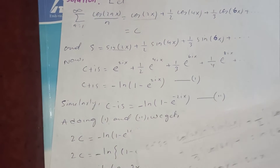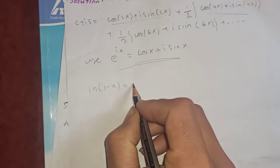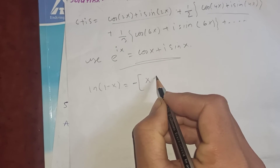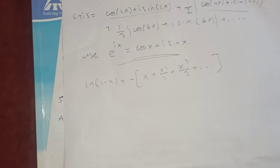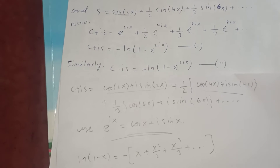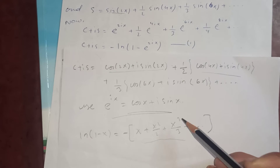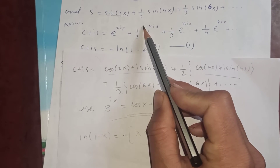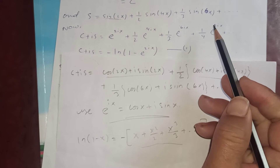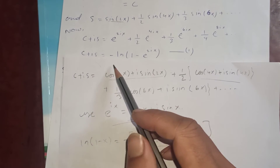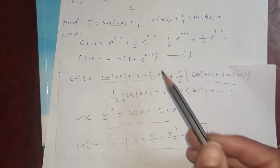Now if you see the expansion of log: log(1 - x) equals negative of (x + x²/2 + x³/3 + ...). This is exactly the same structure here, because the first term is e^(2ix), the next power is e^(4ix) which is (e^(2ix))², and so on. So C plus iS equals minus log(1 - e^(2ix)).